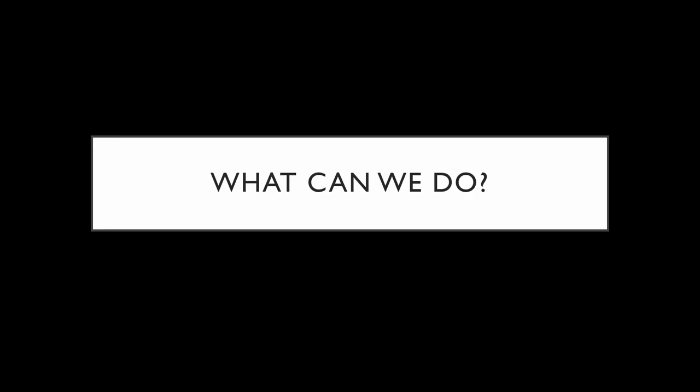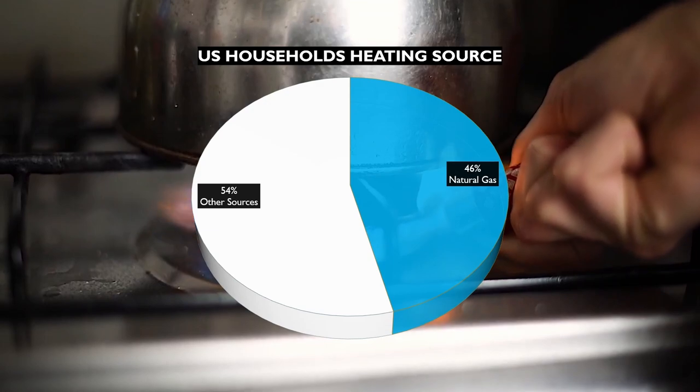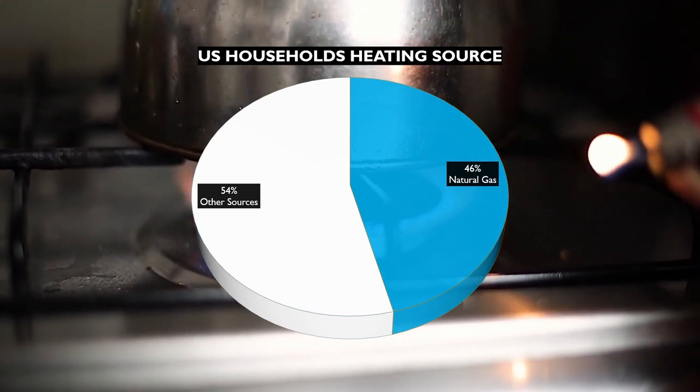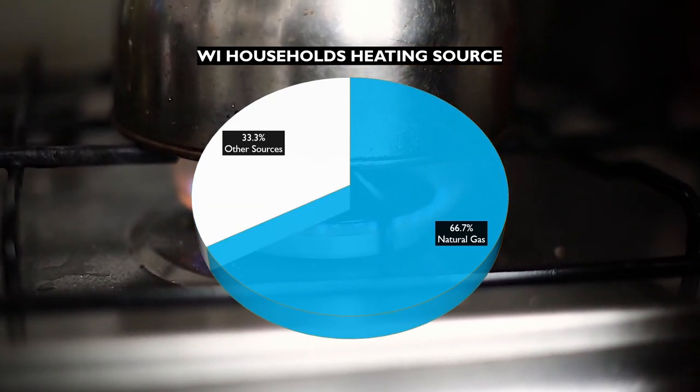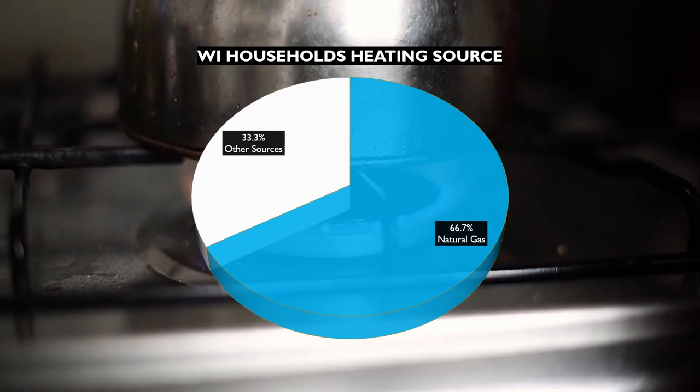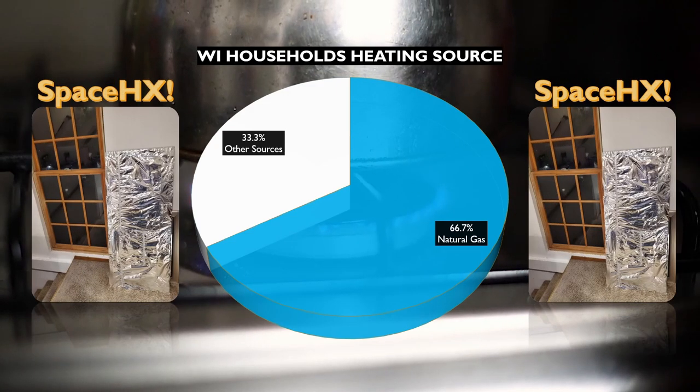So, what can we do? Well, 46% of houses in the US are heated with natural gas, and that number is over two-thirds in Wisconsin. So if we save on energy, that can have a big impact. And that's where Space HX comes in.